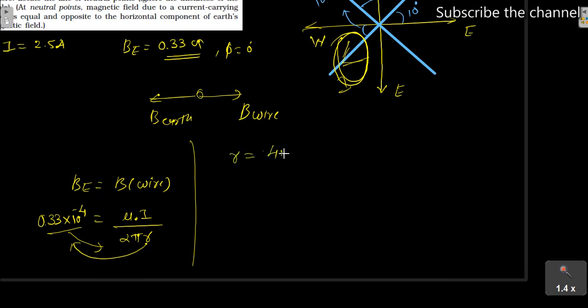Mu0 means 4 pi times 10 to the power minus 7 times I, that's 2.5, divided by 2 pi times 0.33 times 10 to the power minus 4. This is 2.5 divided by 0.33. And here it will be minus 3. If you simplify it, it will be 1.5 cm.